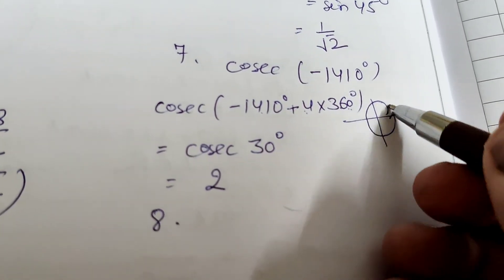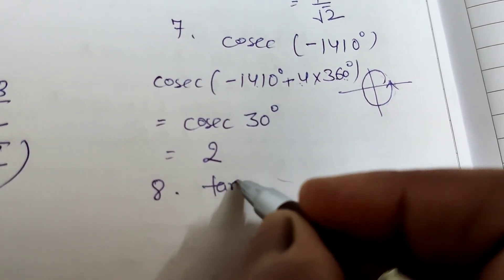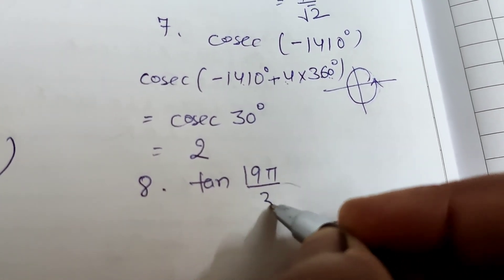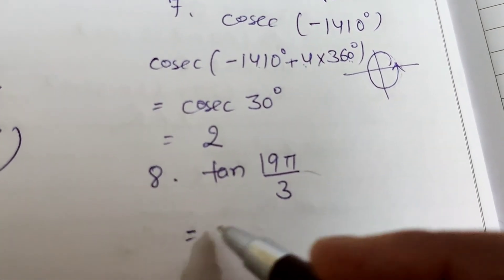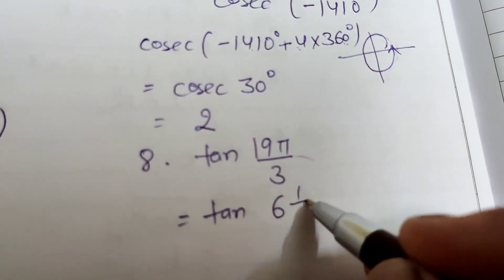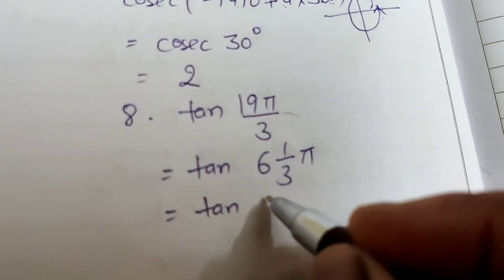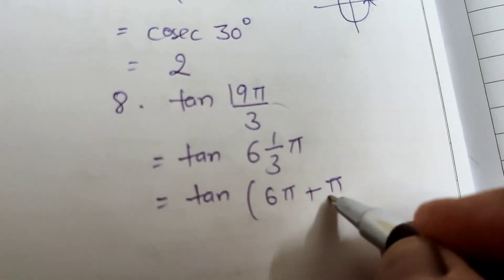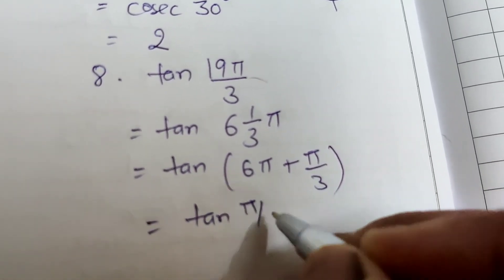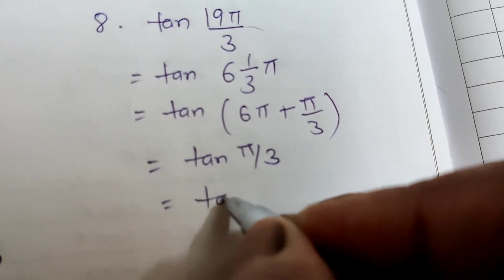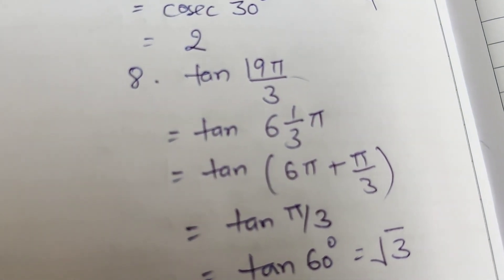Question 8: tan(19π/3). We write 19π/3 = 6π + π/3. Since tan(6π + π/3) = tan(π/3) = tan 60° = √3.